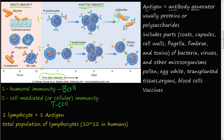An antigen is usually proteins or polysaccharides — sugars linked together. Antigens can include parts from bacteria, viruses, and other microorganisms: their outer coats, capsules, cell walls, flagella, or fimbriae — little finger-like projections. They can also be any toxins that bacteria and viruses secrete or emit.